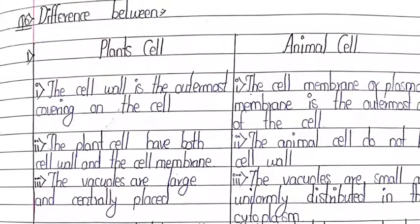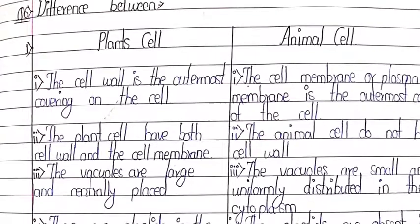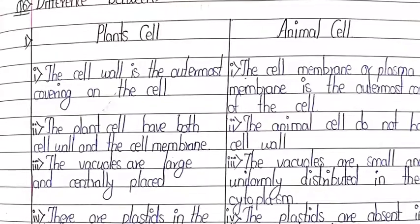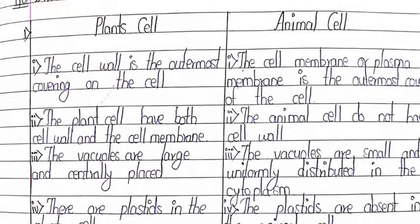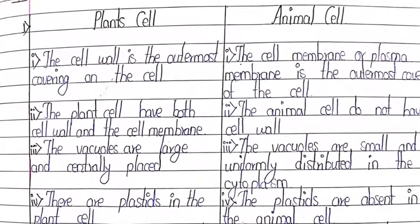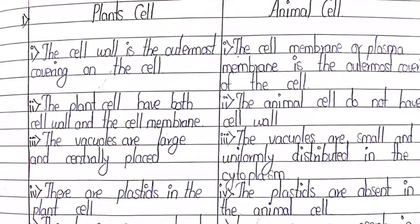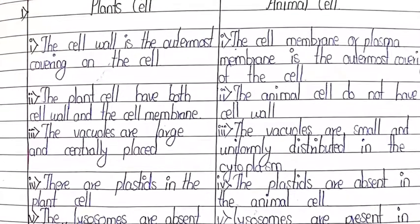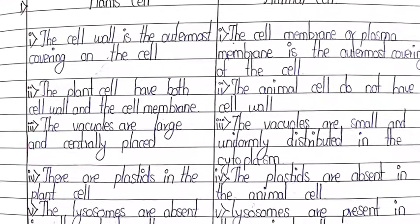Question number 6: Difference between plant cell and animal cell. First: the cell wall is the outermost covering of the plant cell; in animal cell, the cell membrane or plasma membrane is the outermost covering. Second: the plant cell has both cell wall and cell membrane; the animal cell does not have a cell wall. Third: vacuoles are large and centrally placed in plant cells; vacuoles are small and universally distributed in the cytoplasm in animal cells. Fourth: there are plastids in the plant cell; plastids are absent in the animal cell.